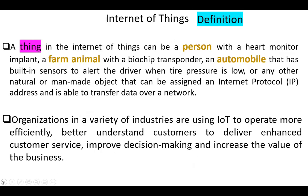A thing in the Internet of Things can be a person with a heart monitor implant, a farm animal with a biochip transponder, an automobile that has built-in sensors to alert the driver when tire pressure is low, or any other natural or man-made object that can be assigned an Internet protocol address and is able to transfer data over a network.